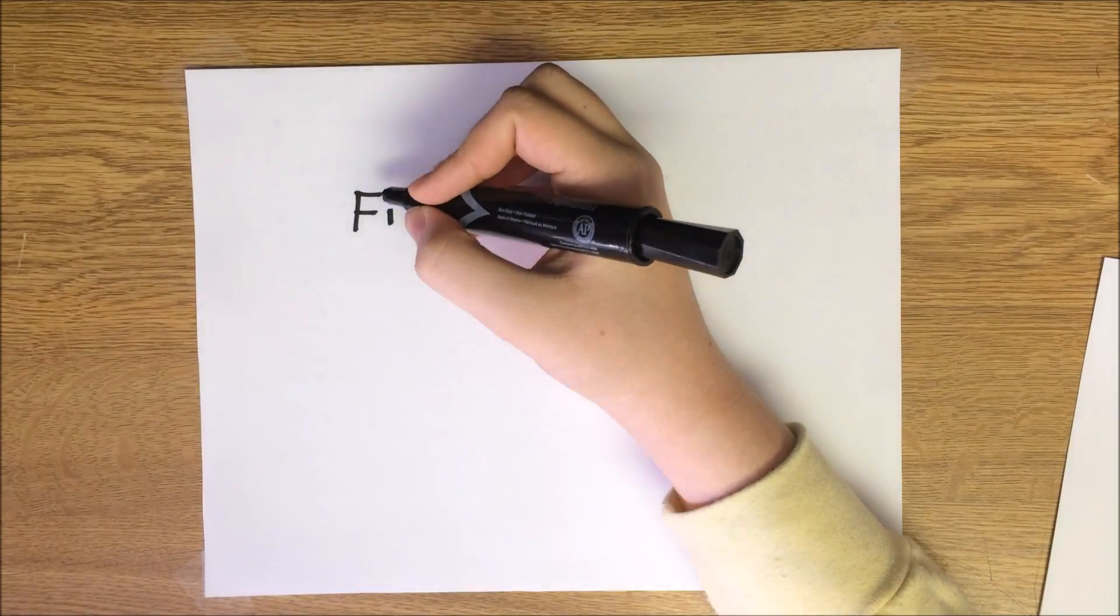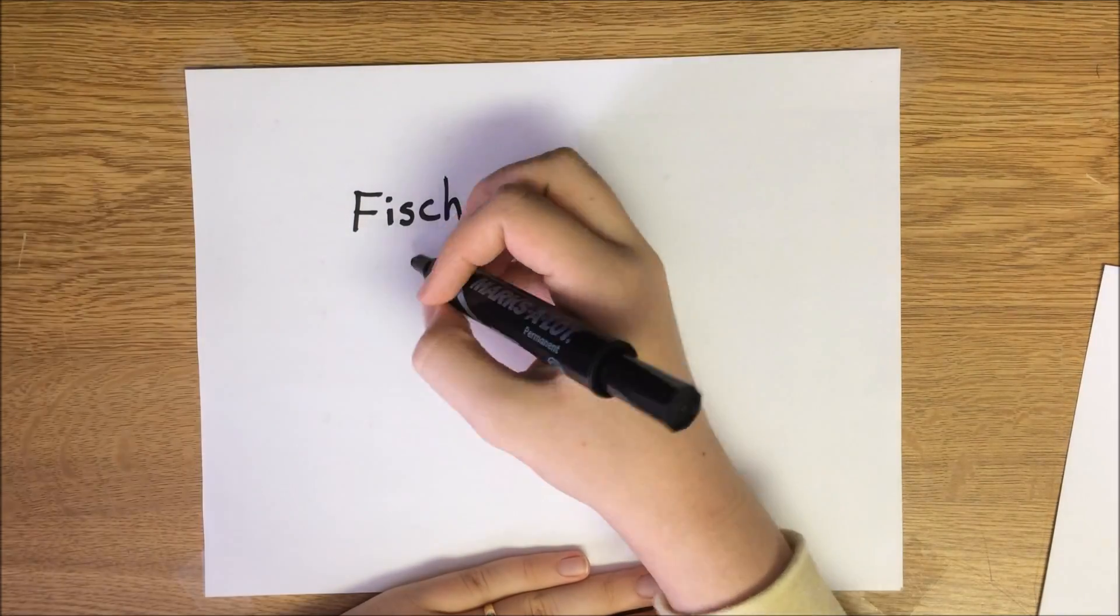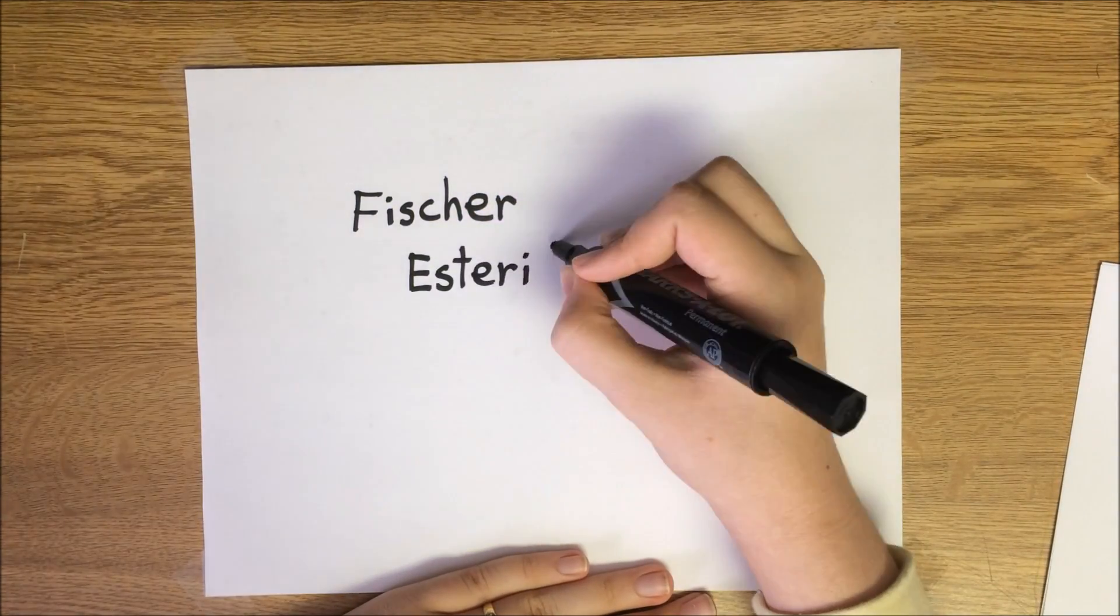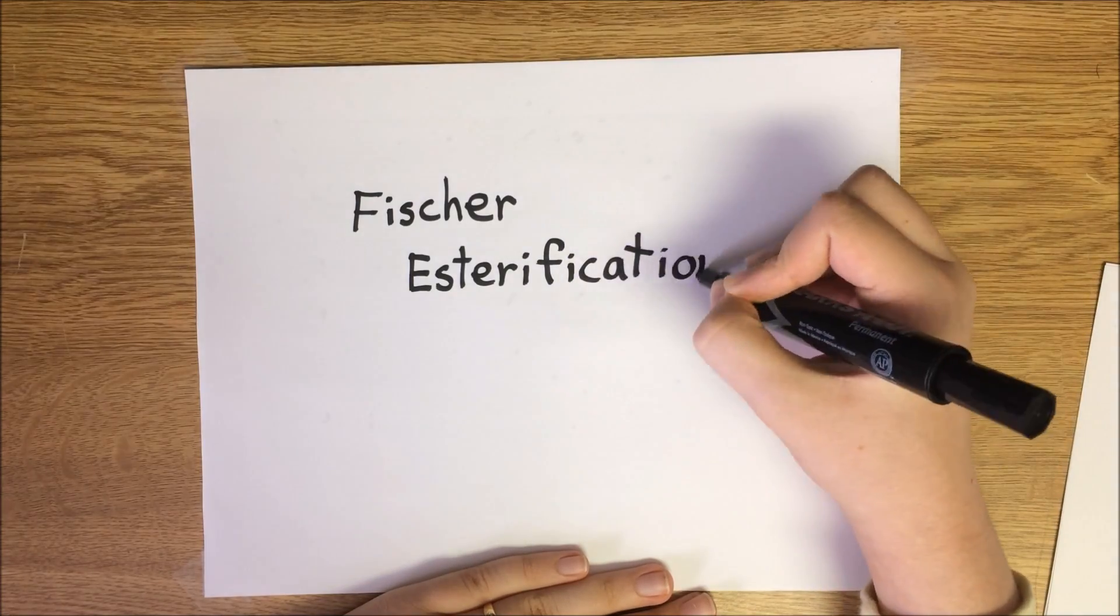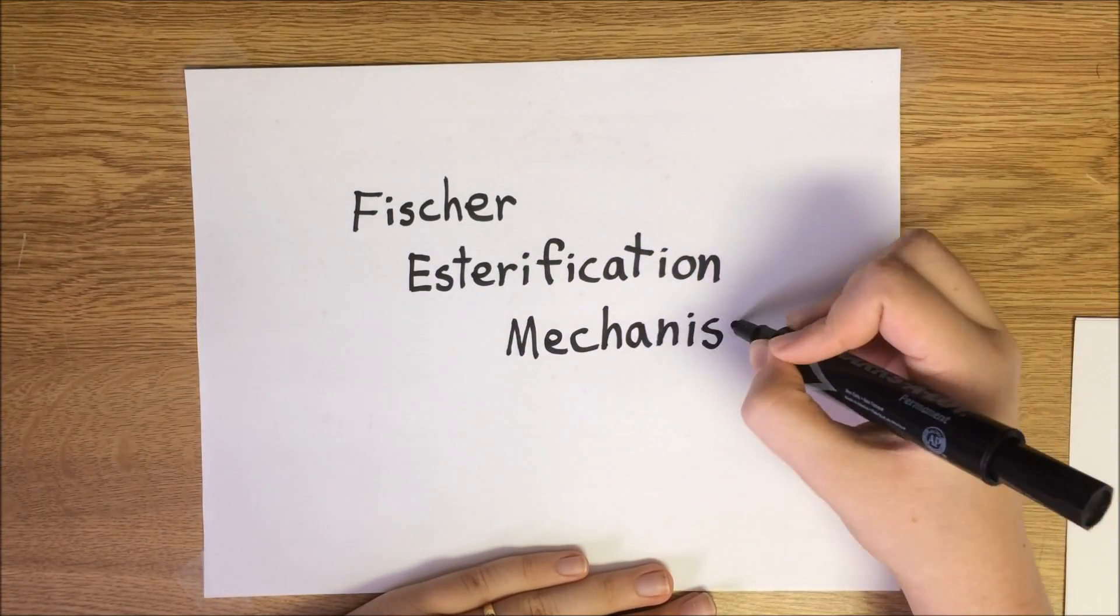Fischer esterification is the process of attacking a carboxylic acid with an alcohol in acidic conditions. The mechanism has six steps with important resonance after steps one and five. Let's see how this reaction takes place.